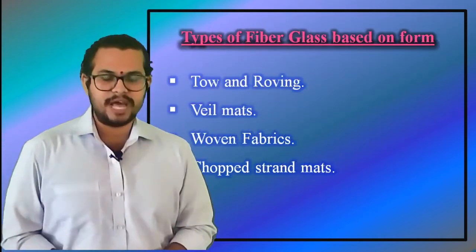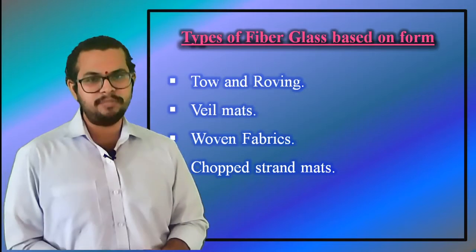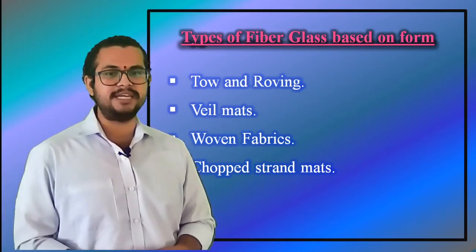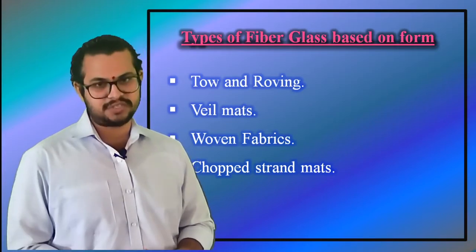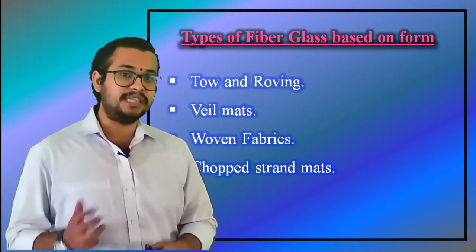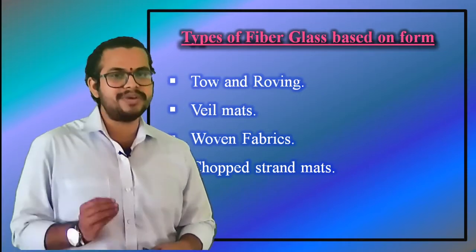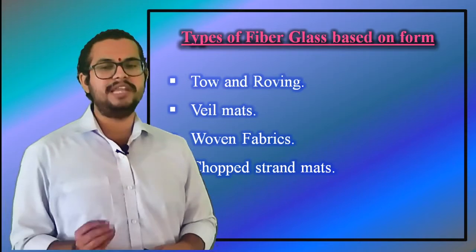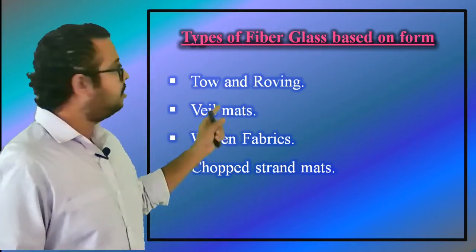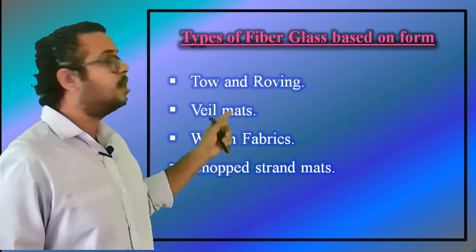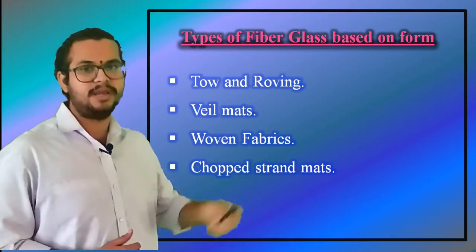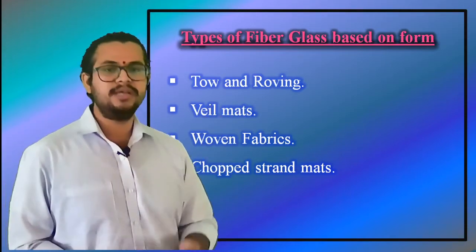Types of fiberglass based on form. Apart from different types of glass fibers which we have already studied in the previous lectures, fiberglass is also available in other forms. The most common forms in which glass fibers are available are tow, veil mats, woven fabrics, and chopped strand mats.